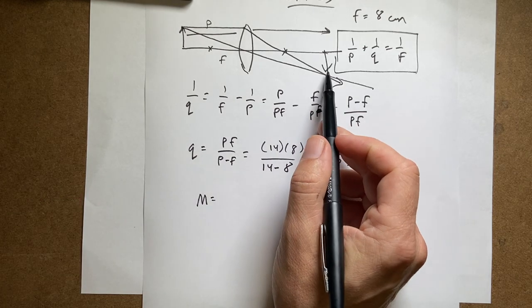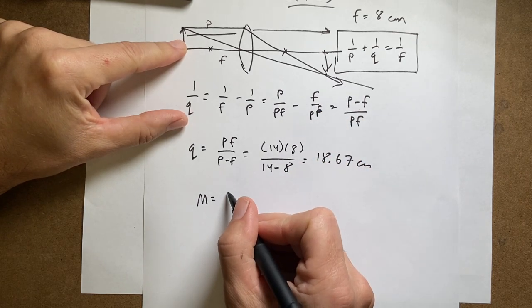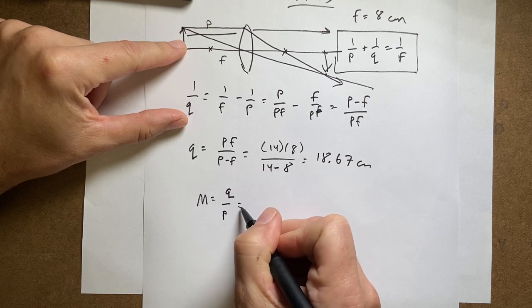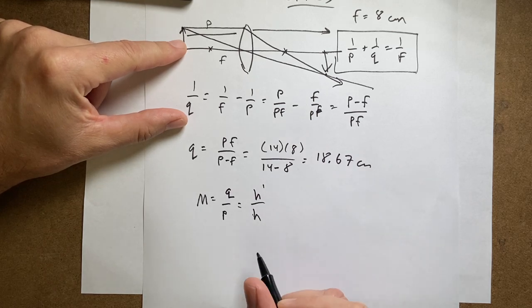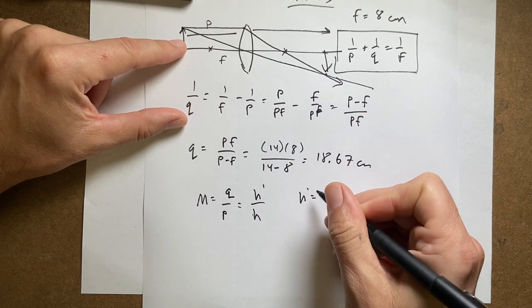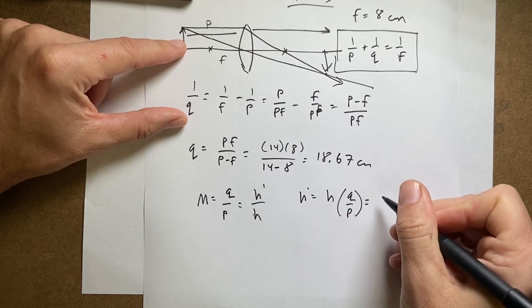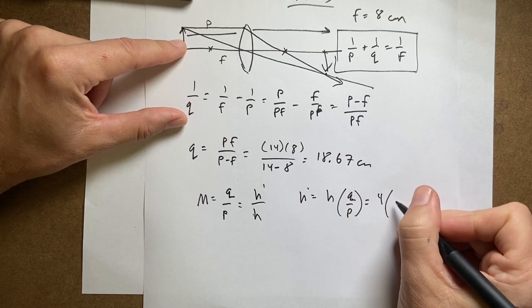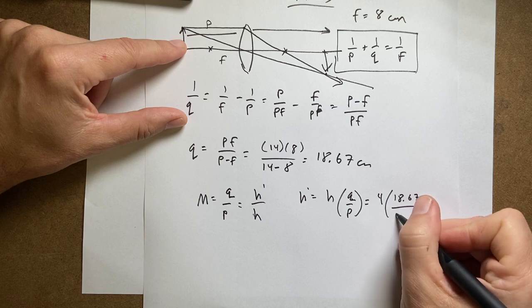It's going to be equal to the ratio of the distances. So the magnification is the image distance over the object distance, and that equals the image height over the object height. h' is the image height, so h' = h × Q/P. It's going to be 4 centimeters times the image distance of 18.67 divided by the object distance of 14.